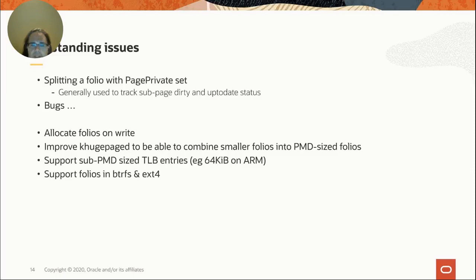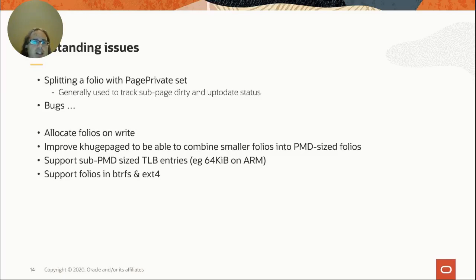I'd also like to support folios in ButterFS and ext4. There are problems with both file systems, but not insurmountable — we can support them under some circumstances. I chose to start working on XFS, and it's the only block-based one currently working. Dave Howells has AFS working with transparent huge pages as well, and other network file systems aren't too far behind. I want to take a crack at NFS fairly shortly. But I have to fix the bugs in the code I currently have before I start writing any more.